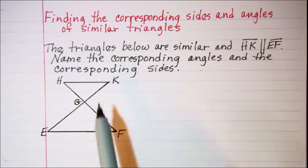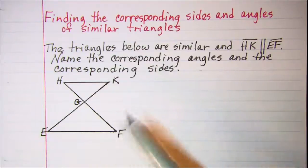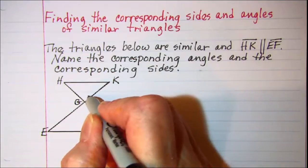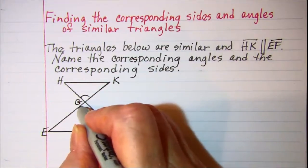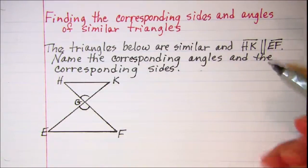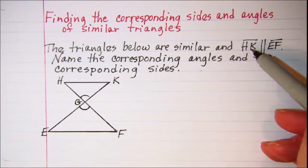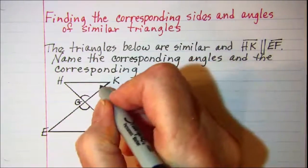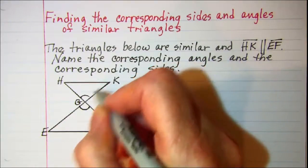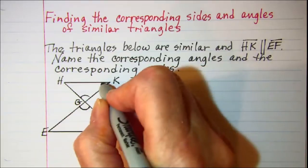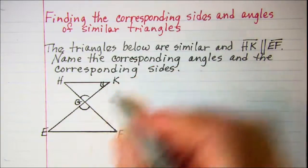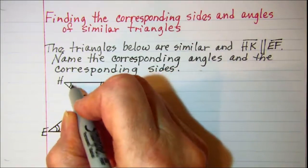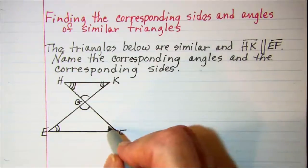Let's mark our corresponding angles that are congruent. First of all we can see that we have vertical angles here, so this angle is congruent to this angle. Then because line segment HK is parallel to line segment EF, we know that alternate interior angles are congruent. So angle K is congruent to angle E, and angle H is congruent to angle F.